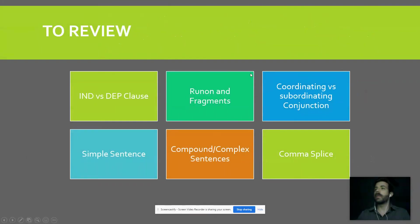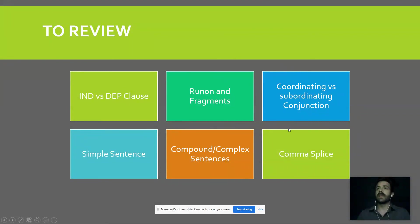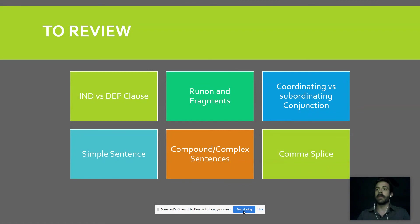As a quick review, go back through your notes and make sure you have these ideas down. Flip open to a new page and write down everything you remember about these six concepts: independent and dependent clauses, fragments and run-ons, coordinating conjunctions, simple and compound-complex sentences, and comma splices. This is just a list to recall what we've done so far. Go back through your notes and check that you remembered everything. Good luck, folks.